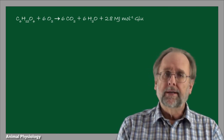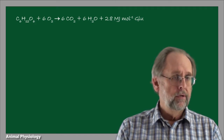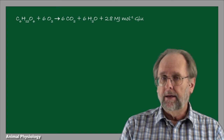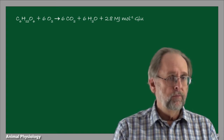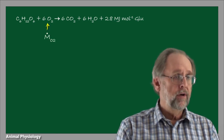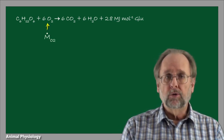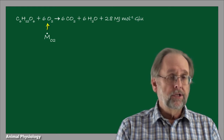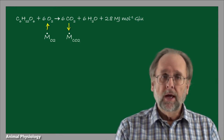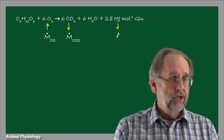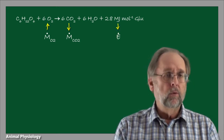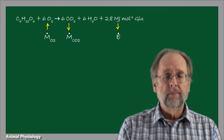About 2.8 megajoules of energy are produced for every mole of glucose oxidized. Consequently, there is an unbreakable stoichiometric relationship between moles of oxygen consumed and joules of energy produced. This means there will be a conversion between the molar consumption rate of oxygen, Ṁ sub O2, the molar production rate of carbon dioxide, Ṁ sub CO2, and the rate of energy production, Ė — namely, the metabolic rate.